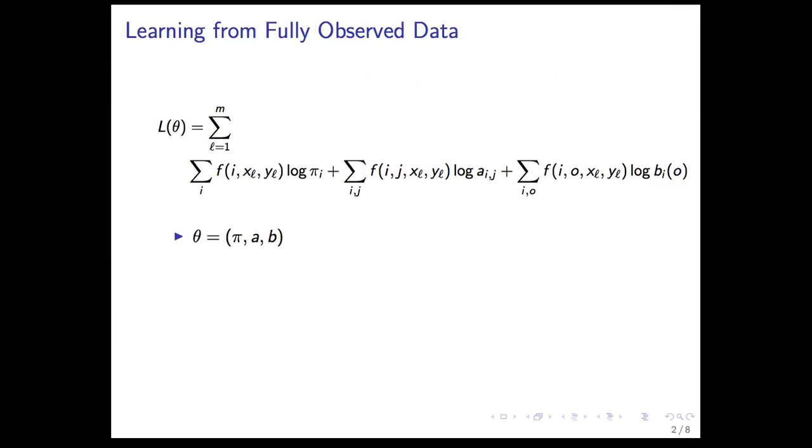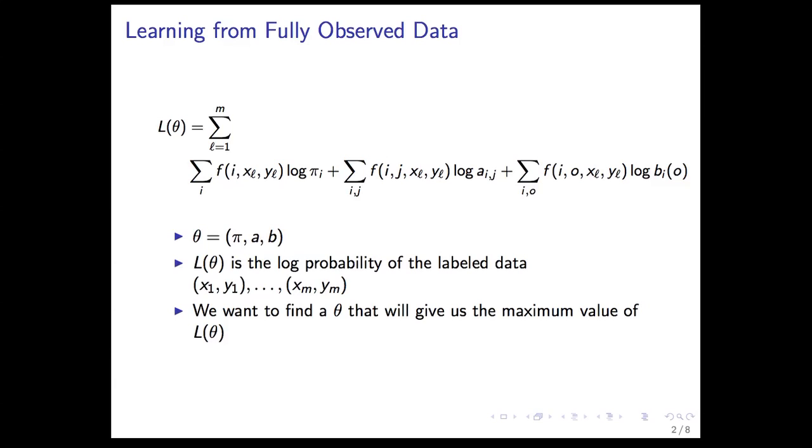We saw that last time, the updates for the pi's and A's and B's were simple counting. Count how many times it occurs divided by the total in order to make it a probability. In this section, we're going to actually derive that update. L(theta) is a log probability, and we want to find the theta that gives us a maximum value of L(theta).